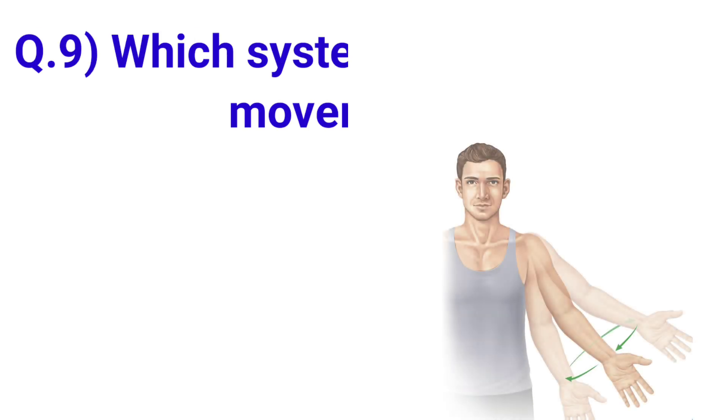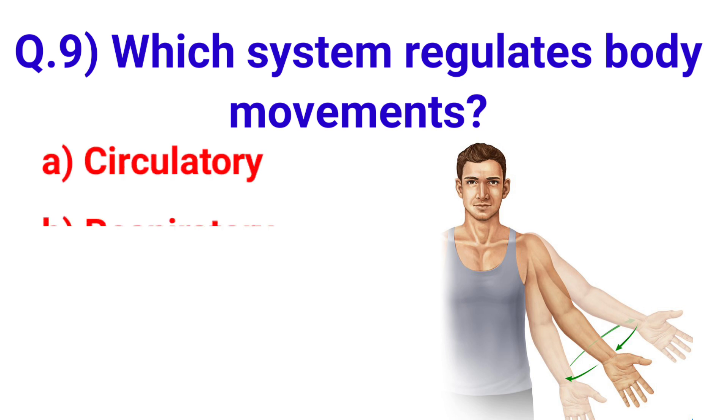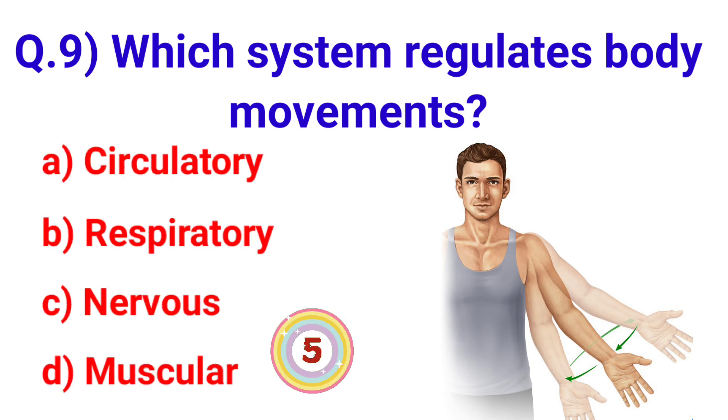Next question: Which system regulates body movements? Your options are: A. Circulatory, B. Respiratory, C. Nervous, D. Muscular.